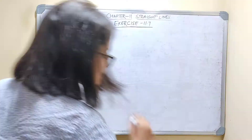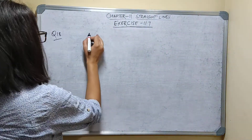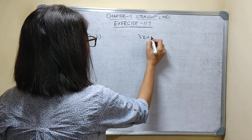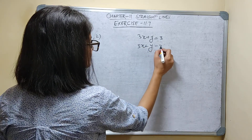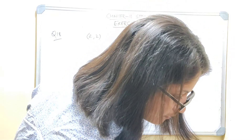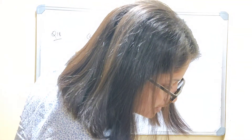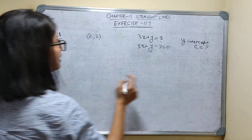Question number 18: a line passes through the point (2,2) and is perpendicular to the line 3x + y = 3. I can write this as 3x + y - 3 = 0. The required line is perpendicular to this line, passes through this point, and we need to find the y-intercept, denoted by c.